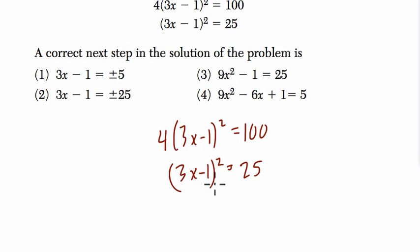Because if you want to find the square root of 3x minus 1 squared, it would just be 3x minus 1. And then, if you take the square root of 25, it could be positive 5 or negative 5.